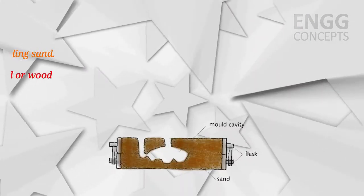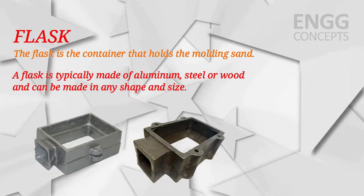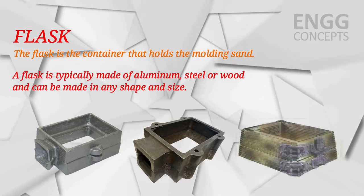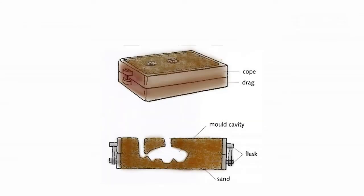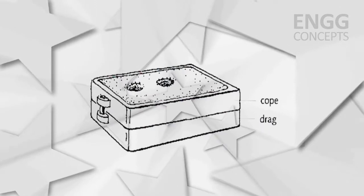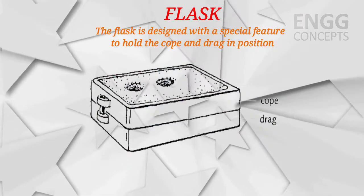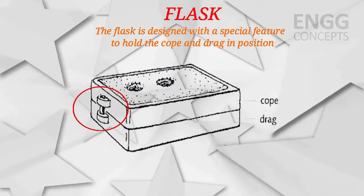The flask is a container that holds the molding sand. It is typically made of aluminum, steel, or wood and can be made in any desired shape and size. The flask can be divided into two parts: the top half is known as the cope and the bottom half is known as the drag. To align the cope and drag, an alignment feature is used, ensuring a more dimensionally accurate casting. Flasks are reusable.